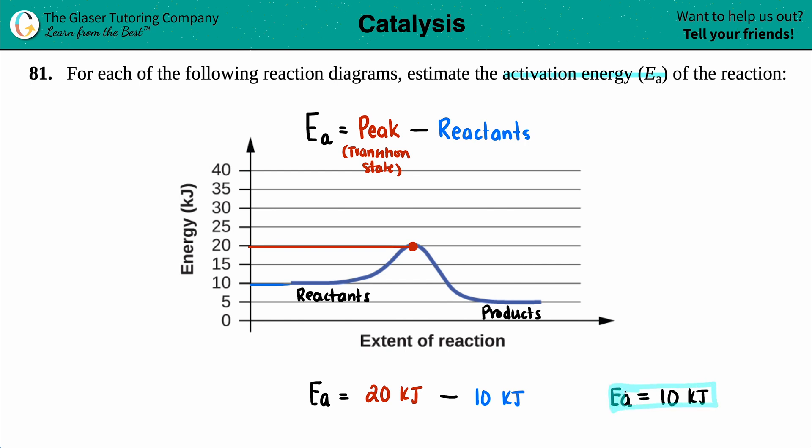And just know that your activation energy or your Ea is always going to be a positive number. So if you accidentally swap the two numbers and you do 10 minus 20, you'll get negative 10, but just know that it's always the absolute value to get you your 10.